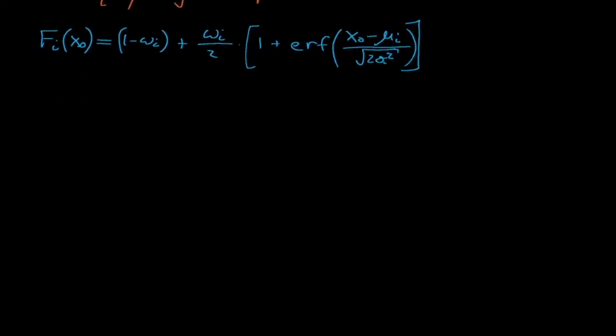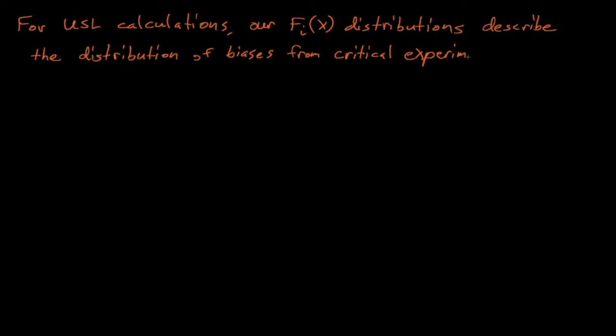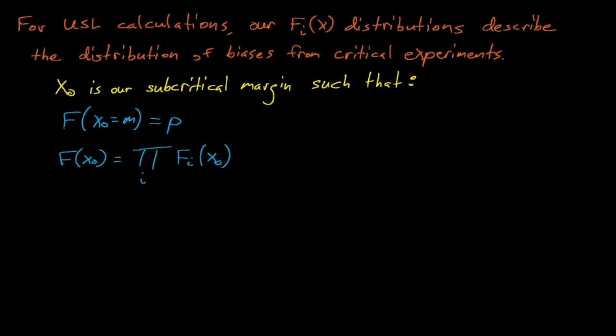So how does Whisper use extreme value theory to estimate USLs? Well, Whisper tries to find the value of x0, represented by m, that corresponds to our desired confidence interval for the upper subcritical limit. We iteratively adjust the value of m until we have a 95% or 98% probability that a randomly sampled bias will be less than this value of m.